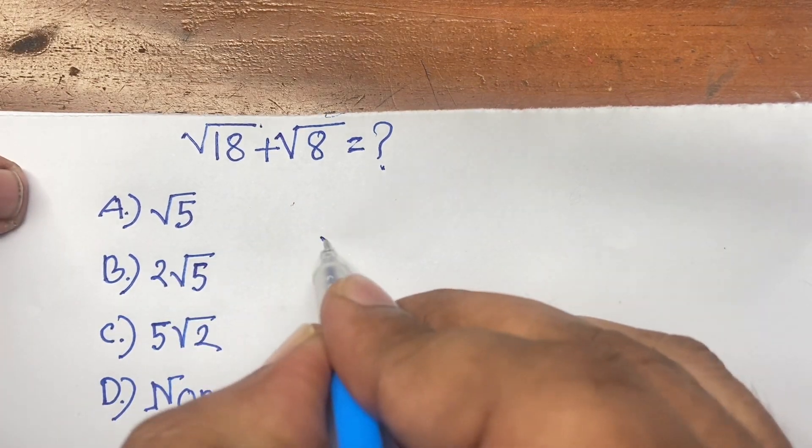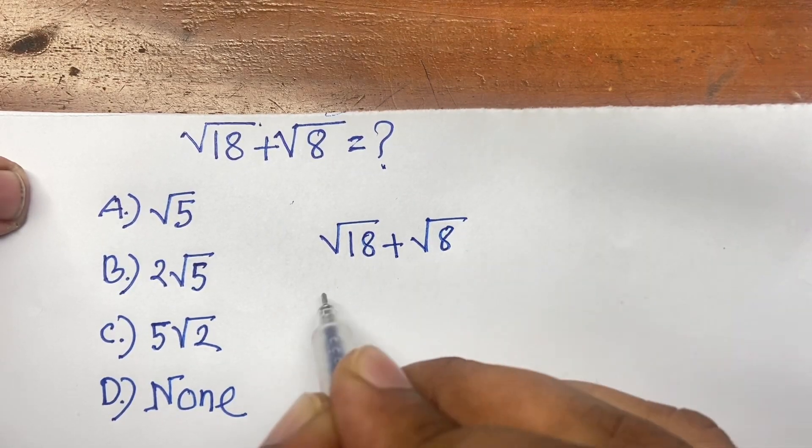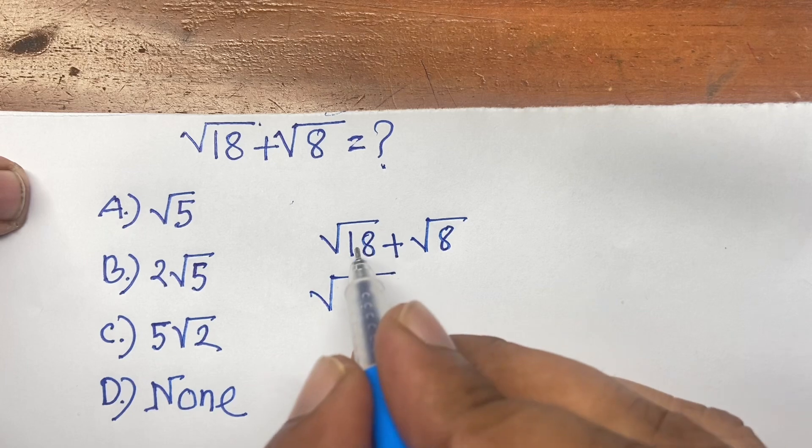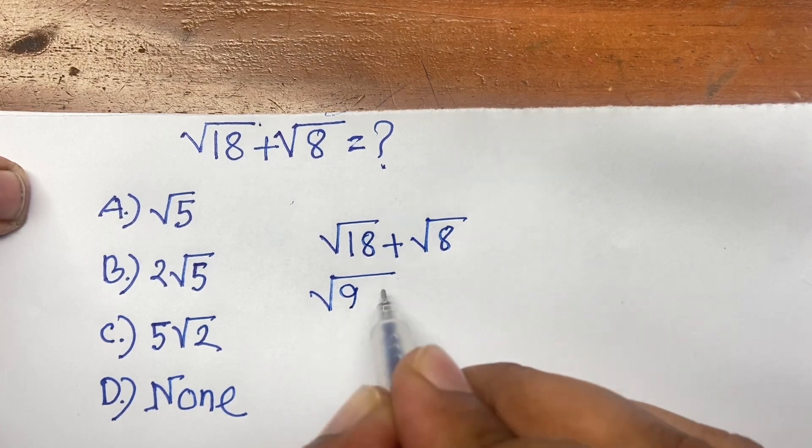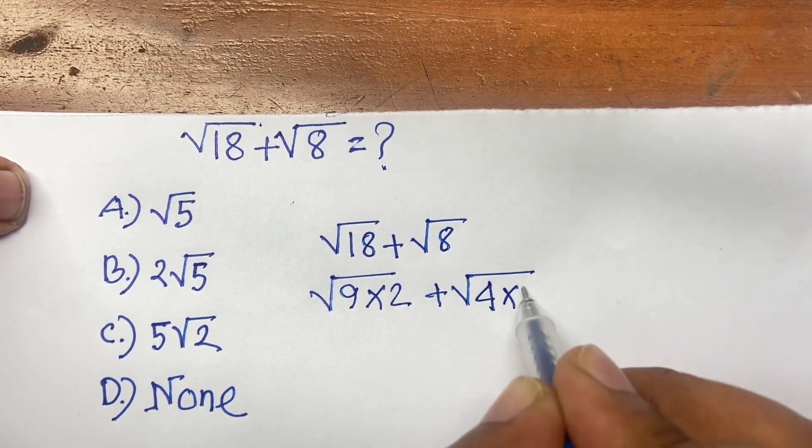So here is square root 18 plus square root 8. We know that square root 18 is like 9 times 2, plus 8 is like 4 times 2.